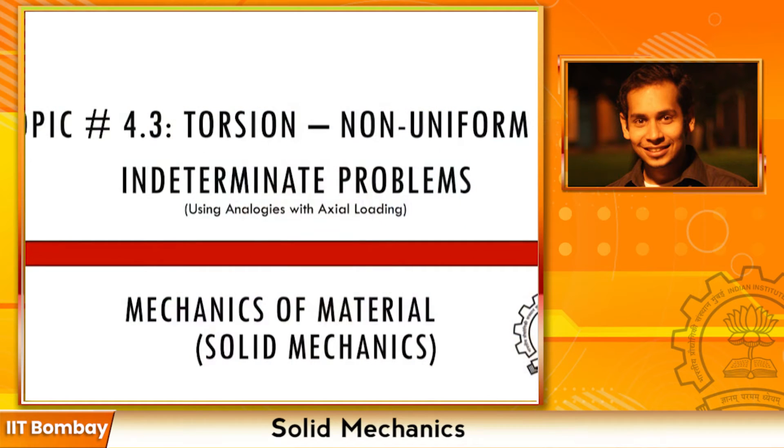Until now we have looked at uniform torsion. The application example we did was actually a case of non-uniform torsion where different parts of the shaft have different torques acting on them. Even in that case, we looked at individual segments piece by piece — the shaft is still uniform locally — but when you zoom out and look at the shaft as a whole, that is a case of non-uniform torsion.